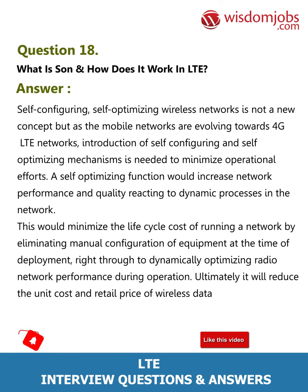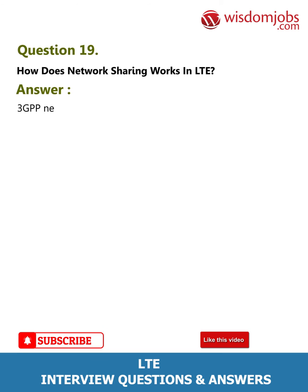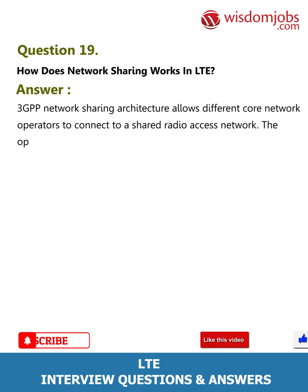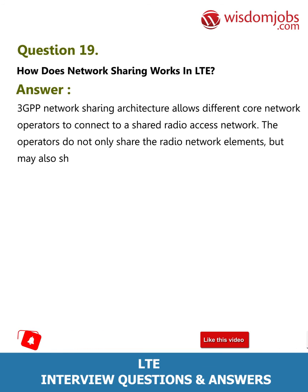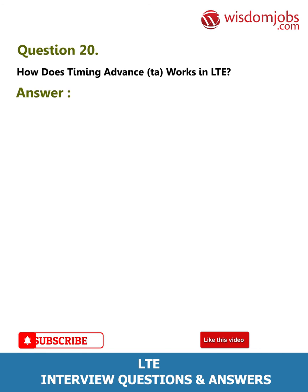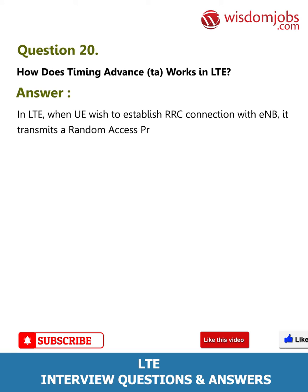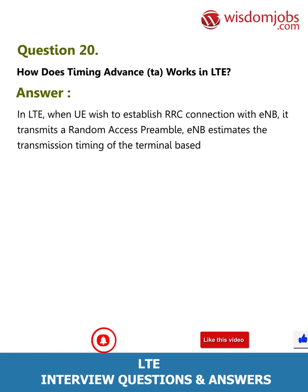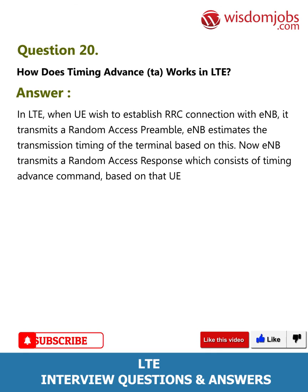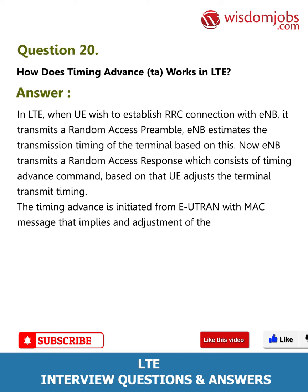Question 19: How does network sharing work in LTE? 3GPP network sharing architecture allows different core network operators to connect to a shared radio access network. The operators do not only share the radio network elements but may also share the radio resources themselves. Question 20: How does Timing Advance (TA) work in LTE? In LTE, when a UE wishes to establish an RRC connection with an eNB, it transmits a random access preamble. The eNB estimates the transmission timing of the terminal based on this, then transmits a random access response consisting of a timing advance command. Based on that, the UE adjusts its transmit timing. The timing advance is initiated from E-UTRAN with a MAC message implying an adjustment of the timing advance.